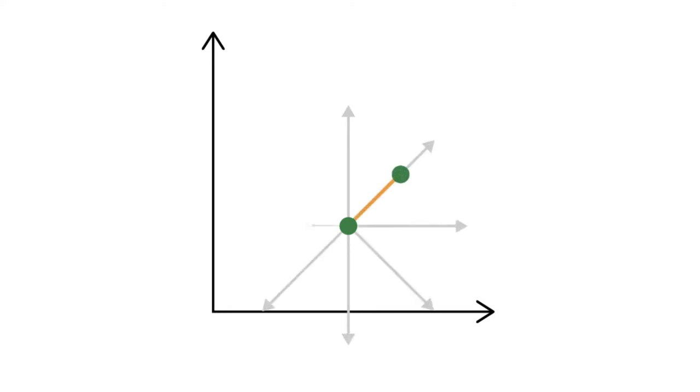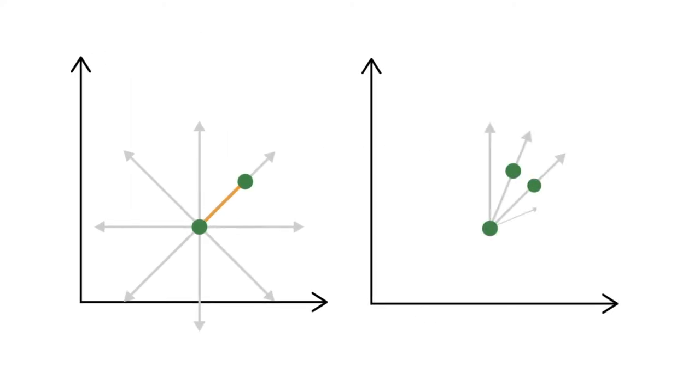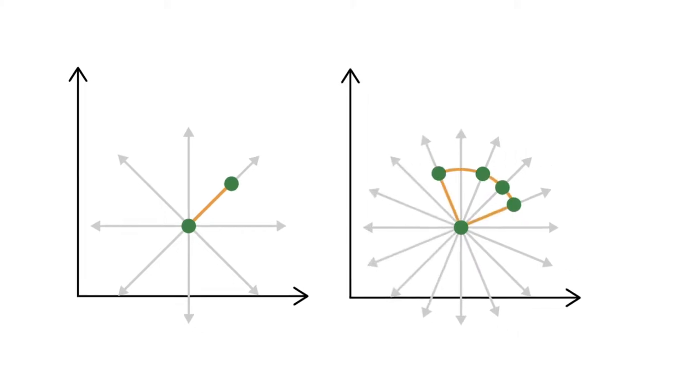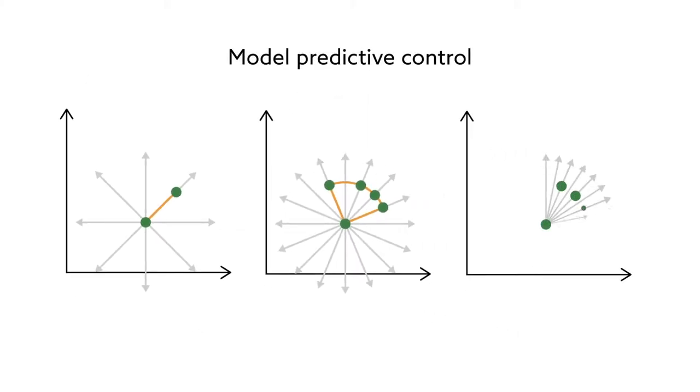Researchers from China have created an algorithm that could make today's automated systems even more powerful. The algorithm is based on a technique called Model Predictive Control. This type of control is what makes many smart guidance systems smart.